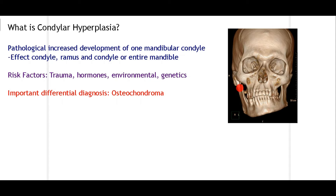Hyperplasia is basically when there is an increase in number of cells, whereas hypertrophy is an increase in the size of the cells. In condylar hyperplasia there is an increase in size of the condyle, which leads to downward movement of the mandible. This process is pathological and can affect the condyle, ramus and condyle, or in some cases the entire mandible. There are different variations which change according to the patient.